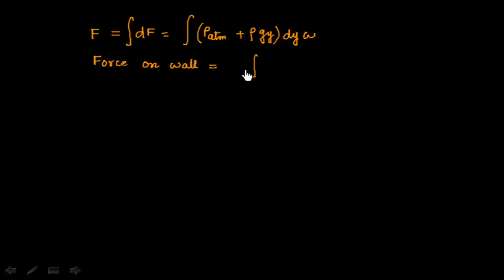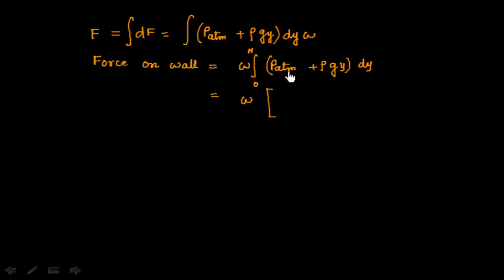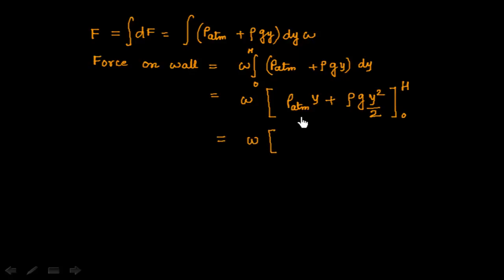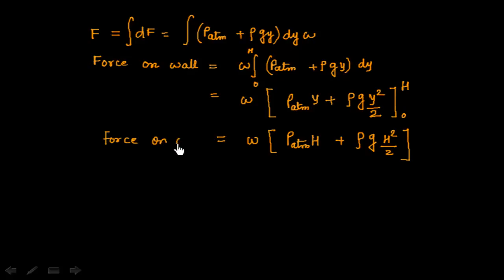Evaluating the integral: the integration of P_atmospheric dy gives P_atmospheric × y, and ρgy integrates to ρg × y²/2. Applying limits from 0 to H, the force on the wall is F = W × [P_atmospheric × H + ρg × H²/2]. The unit for force is Newton.